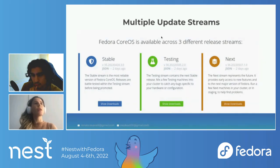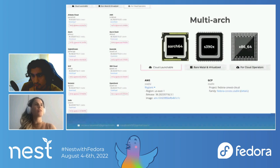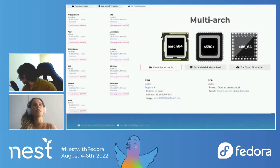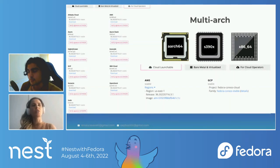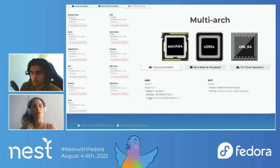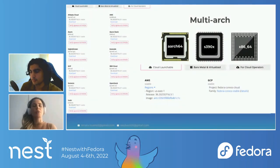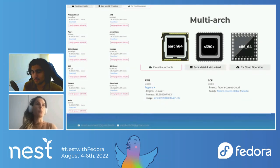We're able to provide various artifacts across all three streams and three different platforms. So we have three streams and three different platforms with all those artifacts. For example, we have GCP, Azure, AWS — basically all the major cloud providers — as well as bare-metal and other virtual platforms.